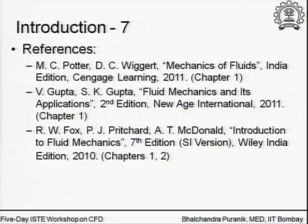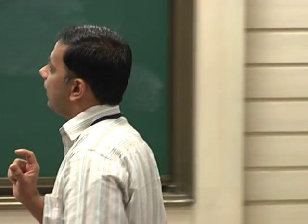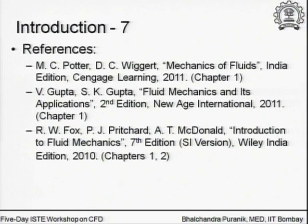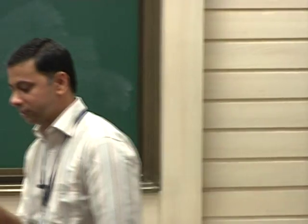Potter and Vigert is a relatively unknown book. The original US title is Mechanics of Fluid; the Indian edition is simply called Fluid Mechanics, published by Cengage Learning — available for around 300-400 rupees. I actually asked the Cengage people to publish it as an Indian edition. It is a very well written, very compact book — nicely and crisply explained. Whatever I have talked about so far you will find in the first two chapters of these books.